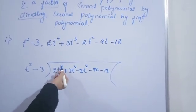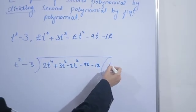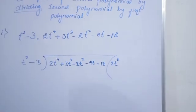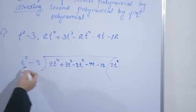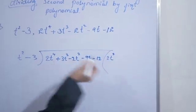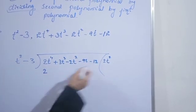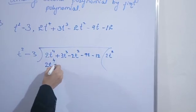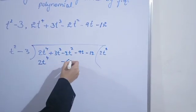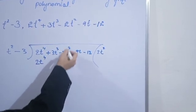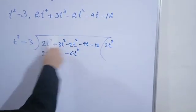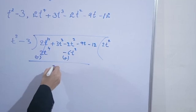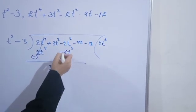Here we need 2t⁴ but we have t², so we need 2t². Multiply 2t² into t² we get t⁴. Next, multiply the second term: plus into minus gives minus 3, so we get 6t². We don't get t³ therefore we write under the t² term. Here we multiply and get t².